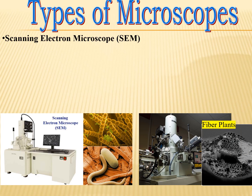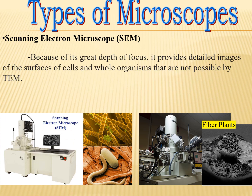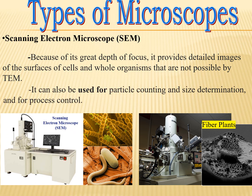Another type of microscope is the scanning electron microscope, or SEM. Because of its great depth of focus, it provides detailed images of the surfaces of cells and whole organisms that are not possible with a transmission electron microscope. It can also be used for particle counting, size determination, and process control.